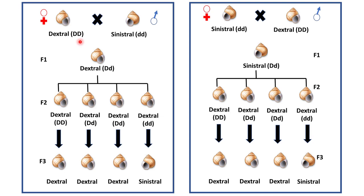Now, if we perform a self-cross among these F1 individuals, we will get four types of genotypes in F2. But all will be dextral only. Why? Because their maternal genotype is capital D small d, which is dextral.